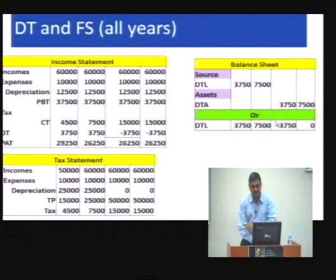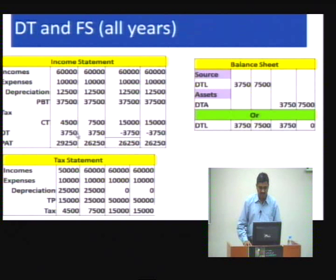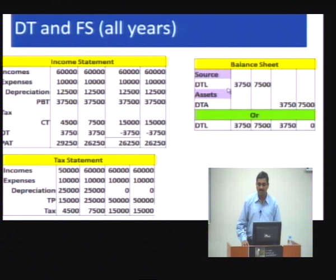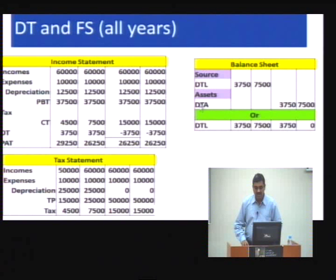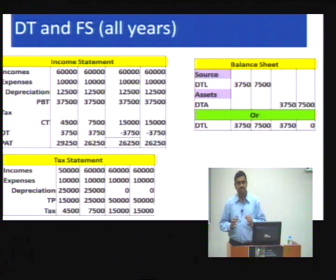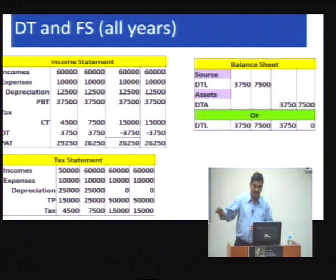In subsequent years, the deferred tax gradually becomes negative because of the narrowing difference between tax profit and accounting profit. On the balance sheet, the deferred tax liability persists for the first two years, then a deferred tax asset emerges. Companies may show DTL and DTA separately or sum them and present a net deferred tax figure on the balance sheet.